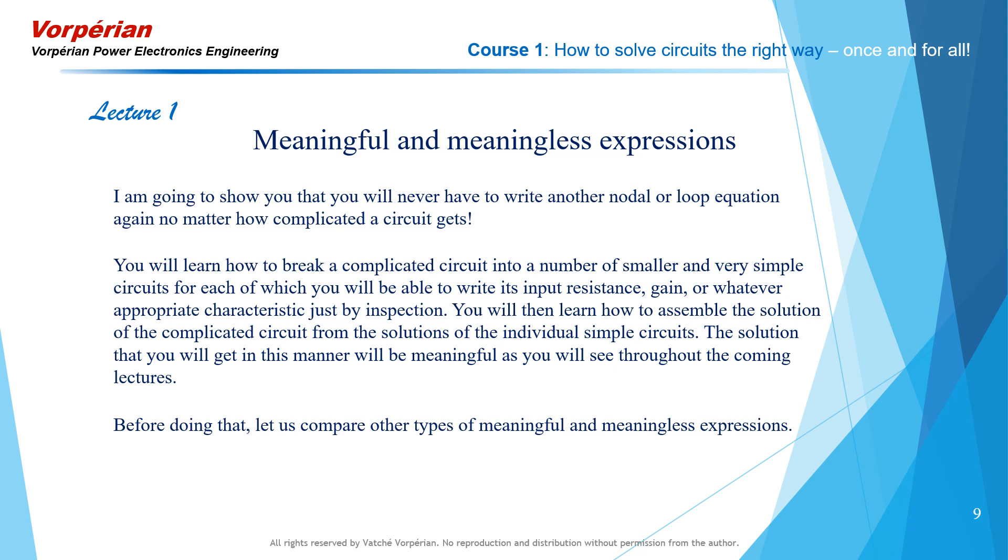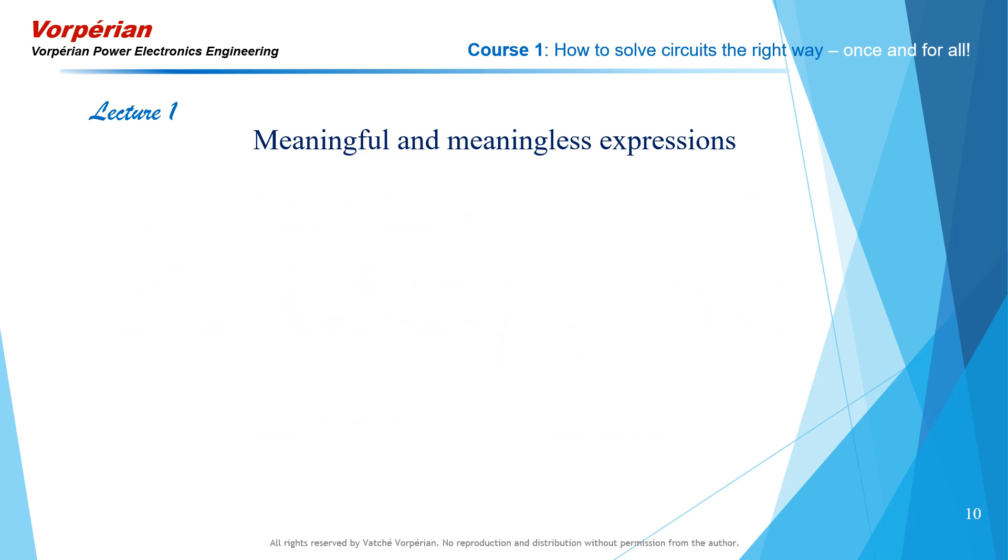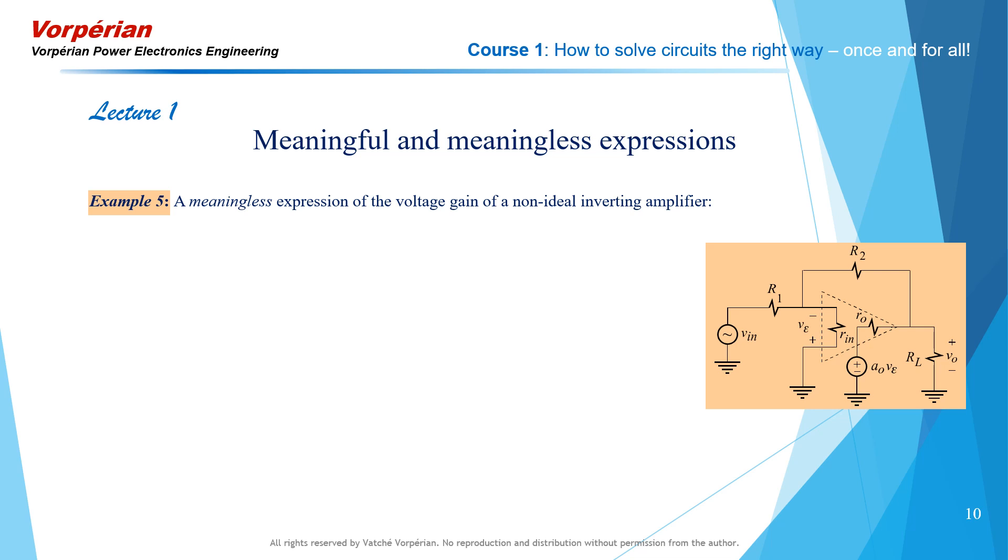Before we do that, I want to compare some other expressions which are meaningful and meaningless. Here is a meaningless expression of the voltage gain of a non-ideal inverting amplifier. I have seen this expression in textbooks, application notes, and in engineering handbooks. When I look at this expression here, I have absolutely no idea as to how the non-ideal components R0, A0, and Rn contribute to the inverting gain, or rather contribute to the deterioration of the inverting gain.